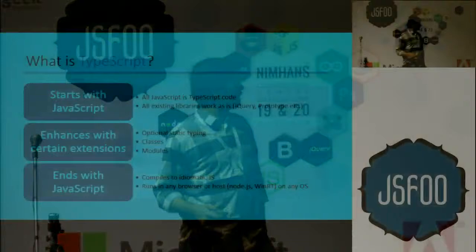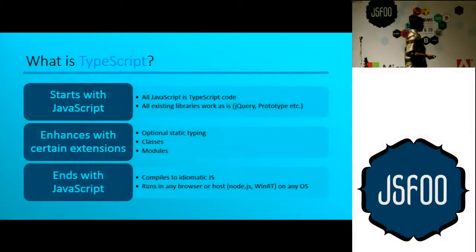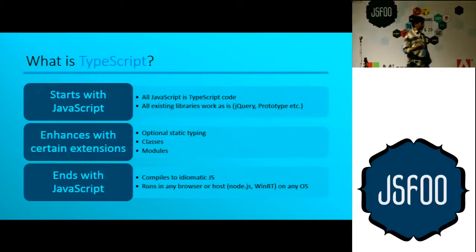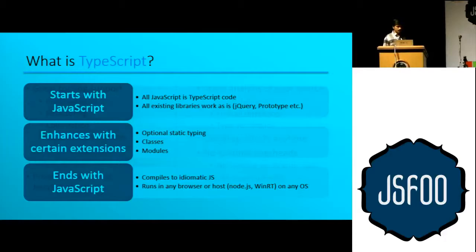It enhances JavaScript with extensions: optional static typing, interfaces, modules. You feed it to a compiler and get JavaScript as output, which runs everywhere — not only in browsers but also on Node, on Windows, building Windows 8 applications with JavaScript. What do you get for this effort? Great tooling support — things static type language developers are familiar with.